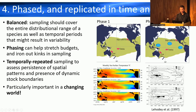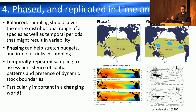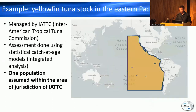Temporal repetition of sampling allows you to assess the persistence of spatial patterns and the presence of dynamic stock boundaries — particularly important in a changing world. We know that ENSO patterns can have a large effect on the distribution of skipjack and yellowfin in the Pacific, with El Niño conditions moving fish to the east in response to movement of the western Pacific warm pool. What effect does that have on stock structure? Does it compress everything? Does it allow a corridor of fish to move across to the eastern Pacific? That's why it's important to have sampling set up to answer some of those questions.